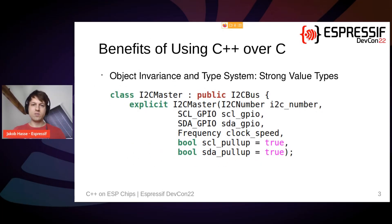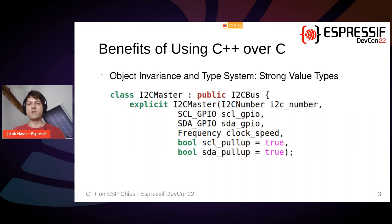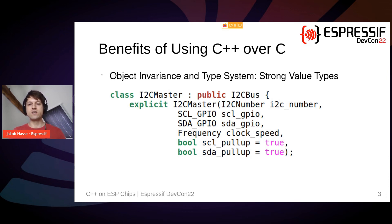In C++ you can use object invariants and the strong typing system to create something called strong value types. Strong value types should feel and be usable like normal types such as int — you can copy them, move them around — but they have some advantages. They have only a private data member and the constructor can ensure that private data member is always valid, so the contained value is always valid. Furthermore, you cannot convert them into another type, which will become useful in a moment.